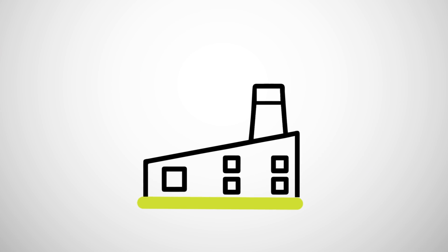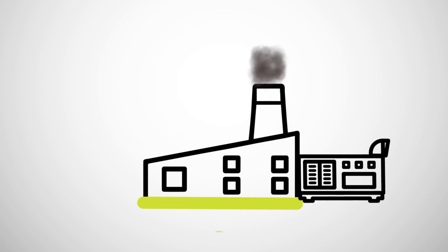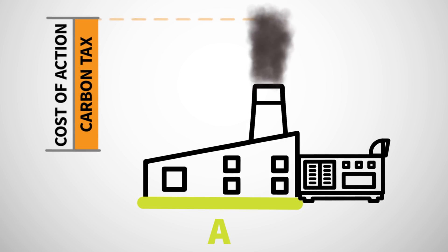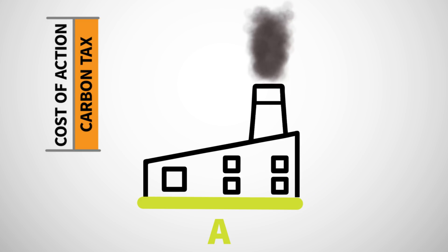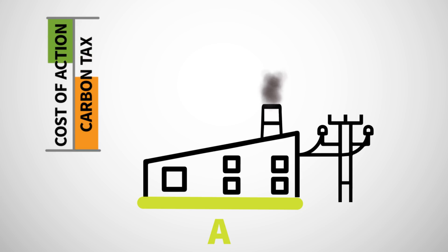Consider a given company, let's call it A. It chooses to take every action to reduce emissions that cost it less than simply paying the tax. For example, it decides to switch from diesel to electricity. Therefore, Company A's emissions are lower than they would have been without the tax.